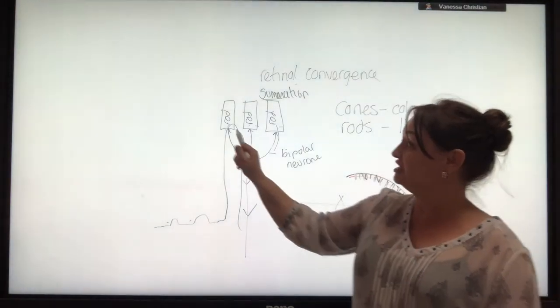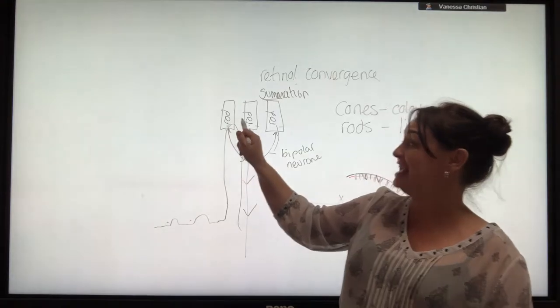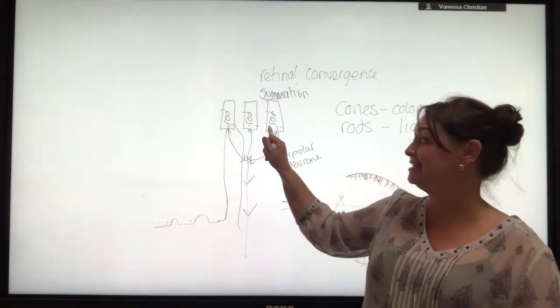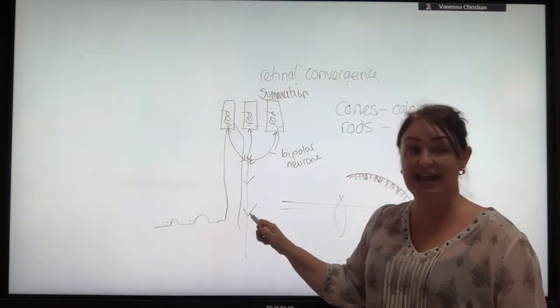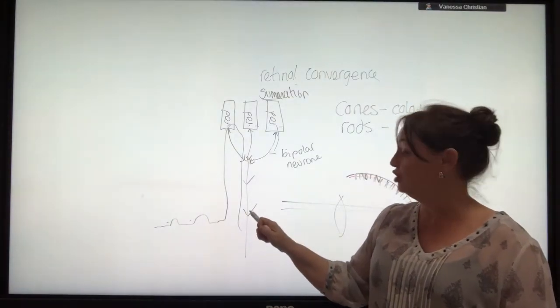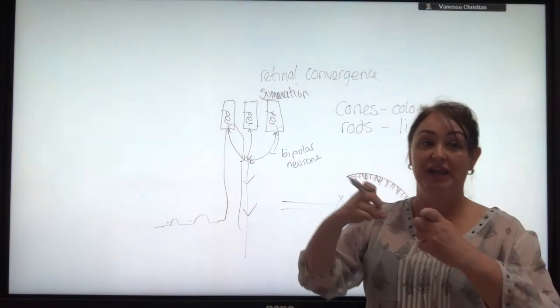Why? Because the little bit of stimulation there is added to that one there is added to that one there. You're more likely to reach threshold, you're more likely to get an action potential, and you're more likely to be able to see with a limited stimulus.